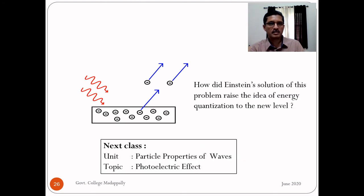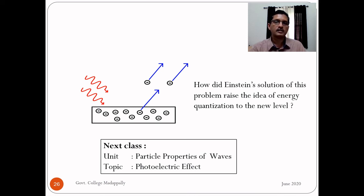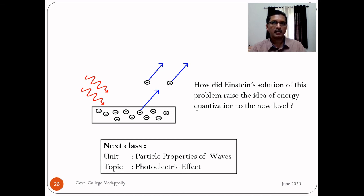With this, we complete the discussion on the blackbody radiation problem. In the next class, we will look at the photoelectric effect — when radiation is incident on a metal surface, electrons are instantaneously ejected. It was Einstein who solved this problem in 1905. We want to understand how Einstein's solution elevated the idea of energy quantization to a new level and what his significant contribution to the development of quantum mechanics was.